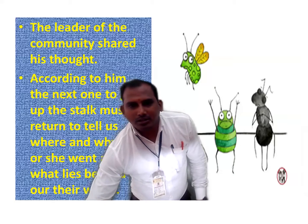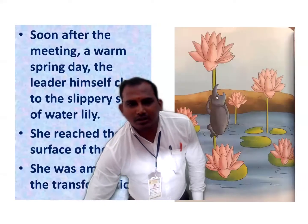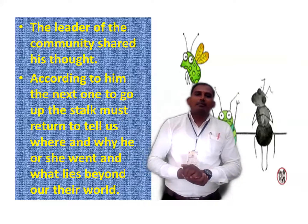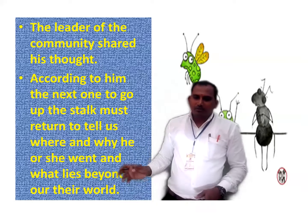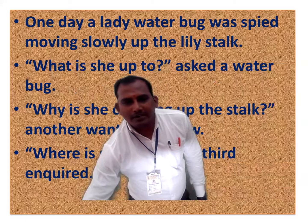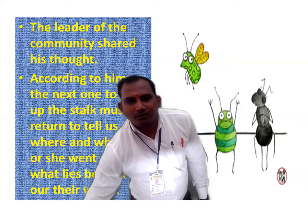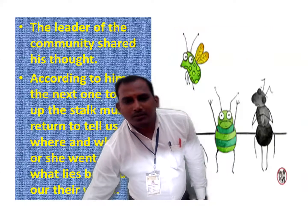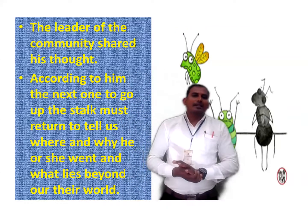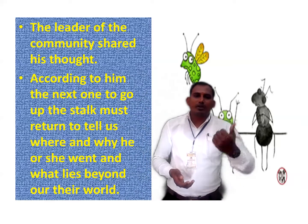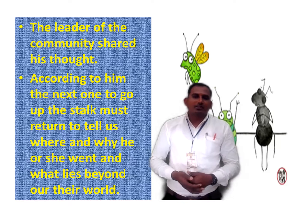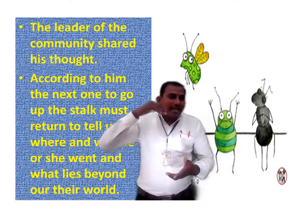This water bug came out and she never returned back to her fellows in the water. When she came out, she turned into a dragonfly. Due to that, the leader of the water bugs called a community meeting. This leader called the meeting about the one water bug who went out of the water with the help of the lily stalk. In that meeting, he declared that the next one who will go out of the water must return back to tell them what lies beyond their world — what is there out of the water.